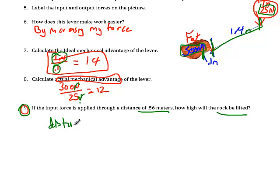then we want to use the ideal mechanical advantage equation. Ideal mechanical advantage is equal to input distance, or distance in, divided by output distance, distance out. But we already know what this is. We calculated it. It's 14. So,